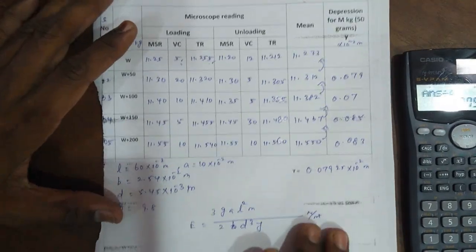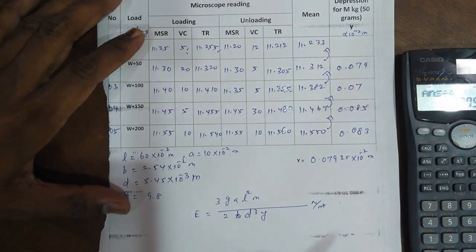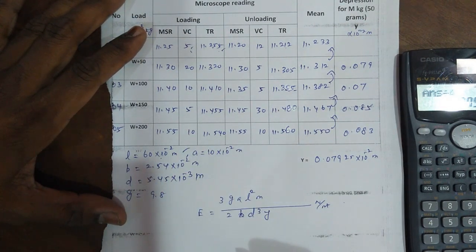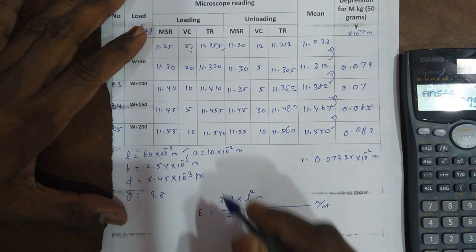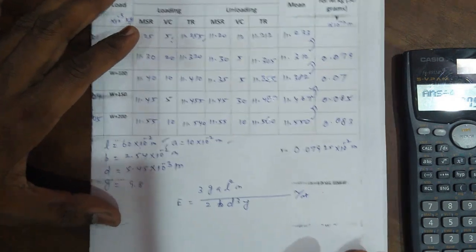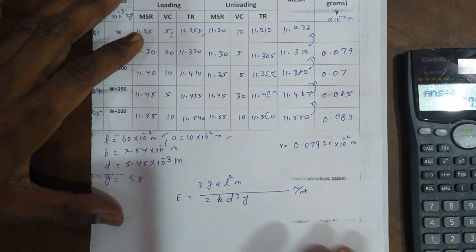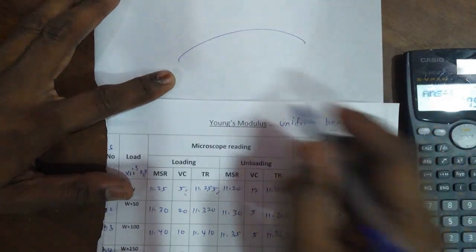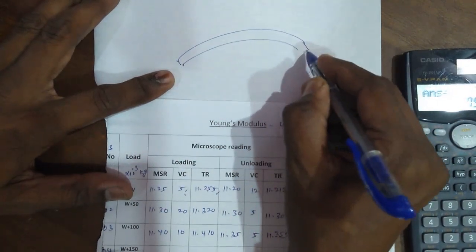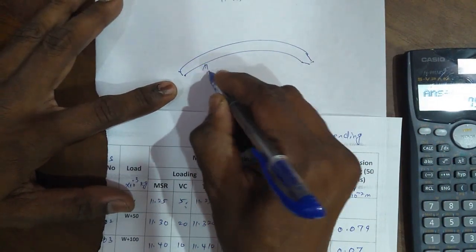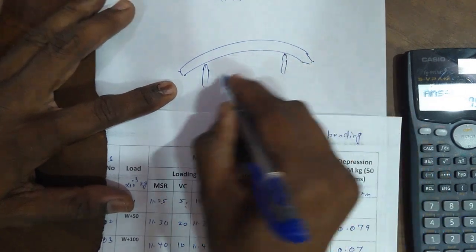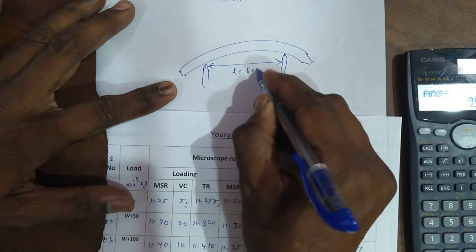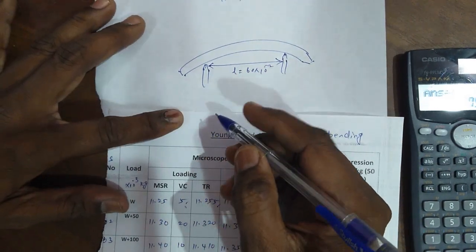You already have the value fixed for this experiment, length of the bar is 60 centimeters, so 60 into 10 to the power of minus 2 meters. A value is already fixed. A means the distance between the slotted weight and knife edges. For example, in Young's modulus uniform bending, there are knife edges on two sides. The length of the bar means distance between the two knife edges, 60 centimeters, fixed for this experiment.